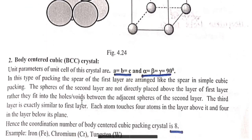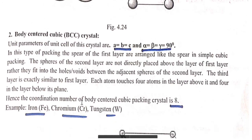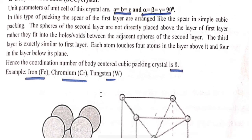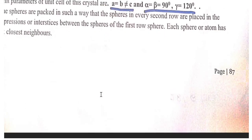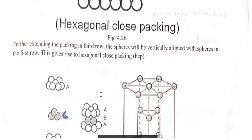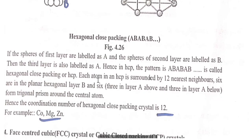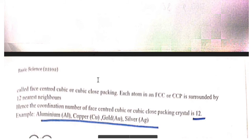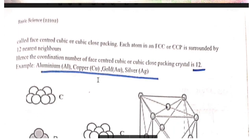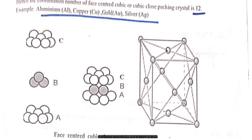Body-centered cubic (BCC): a = b = c, alpha = beta = gamma = 90°. Examples are iron, chromium, and tungsten. Hexagonal close-packed (HCP): a = b ≠ c, alpha = beta = 90° and gamma = 120°. Examples are cobalt, magnesium, and zinc; coordination number is 12. Face-centered cubic (FCC): a = b = c, alpha = beta = gamma = 90°. Examples are gold, aluminium, copper, and silver; coordination number is 12.